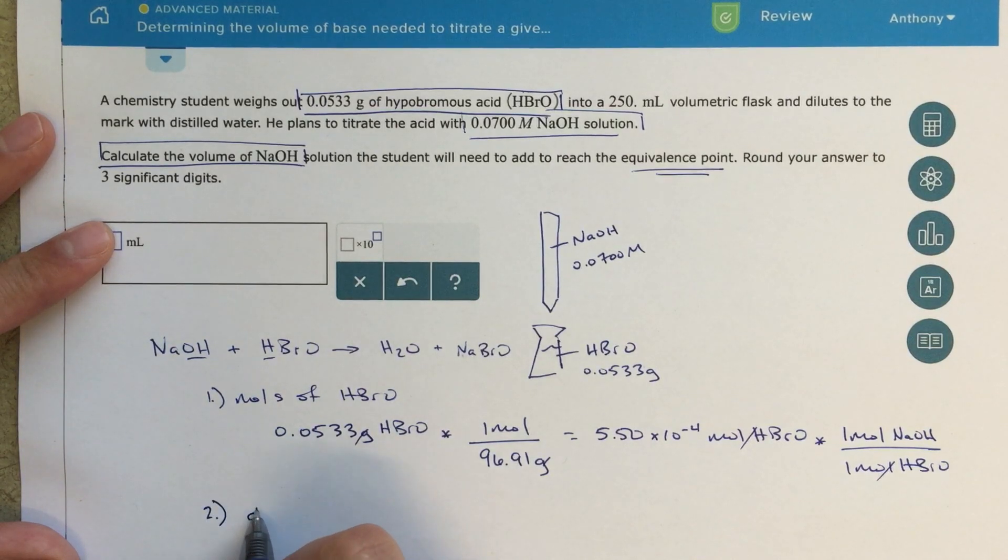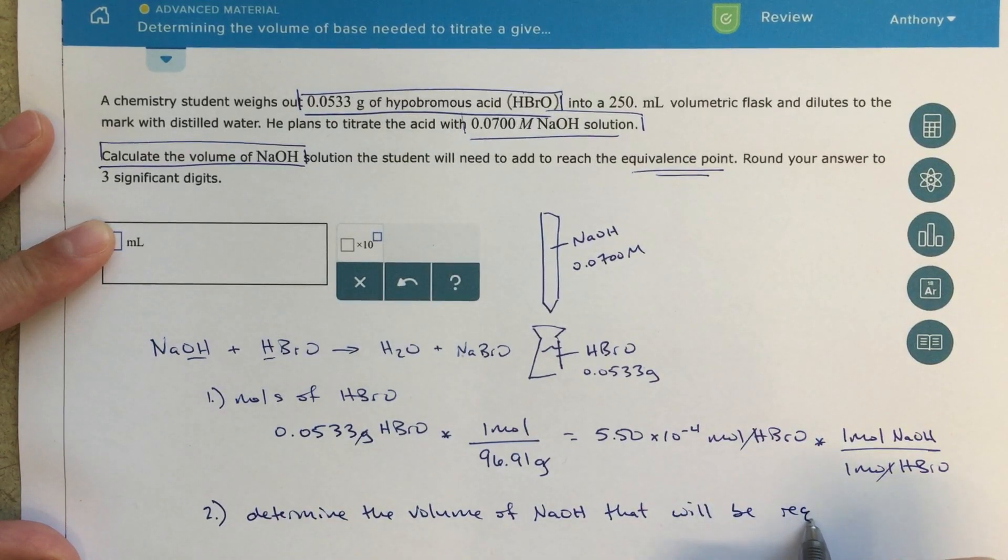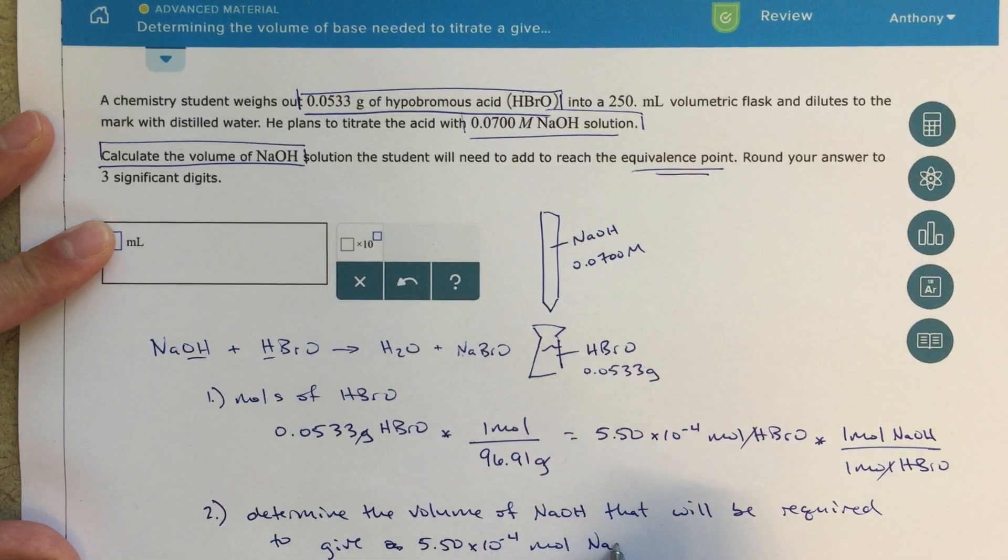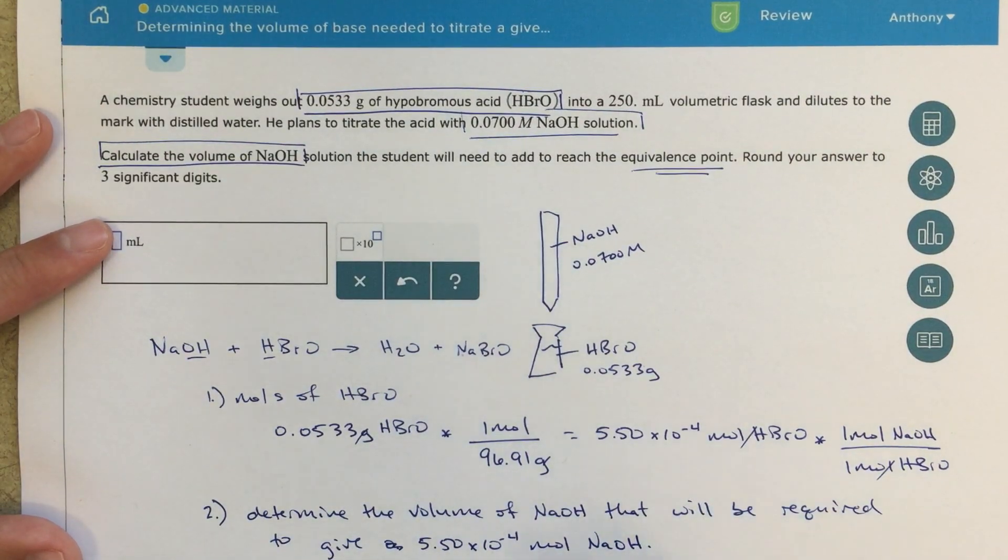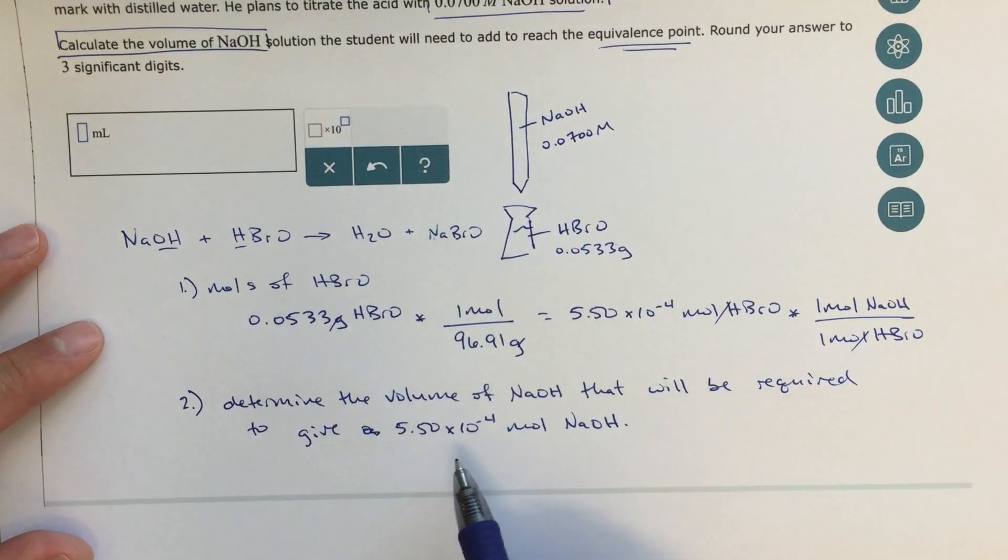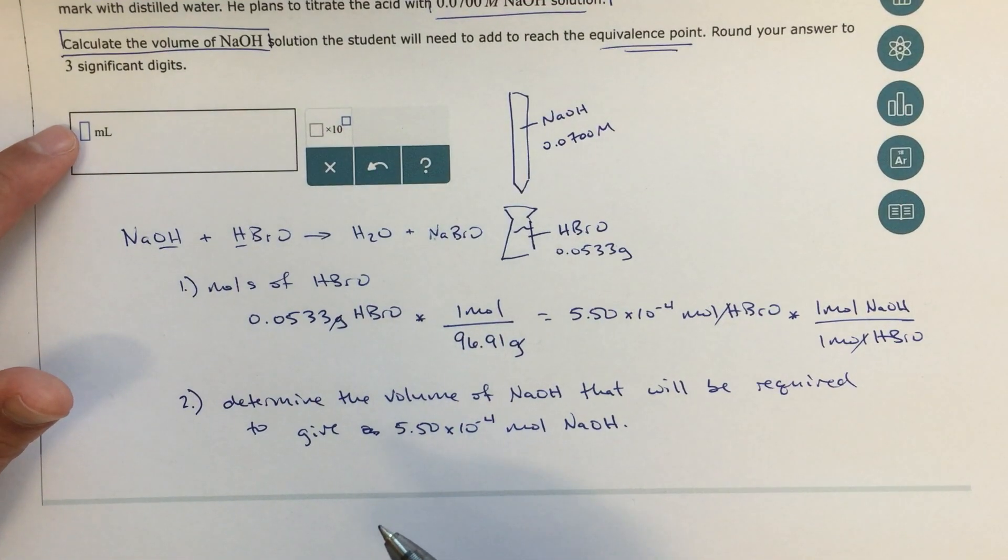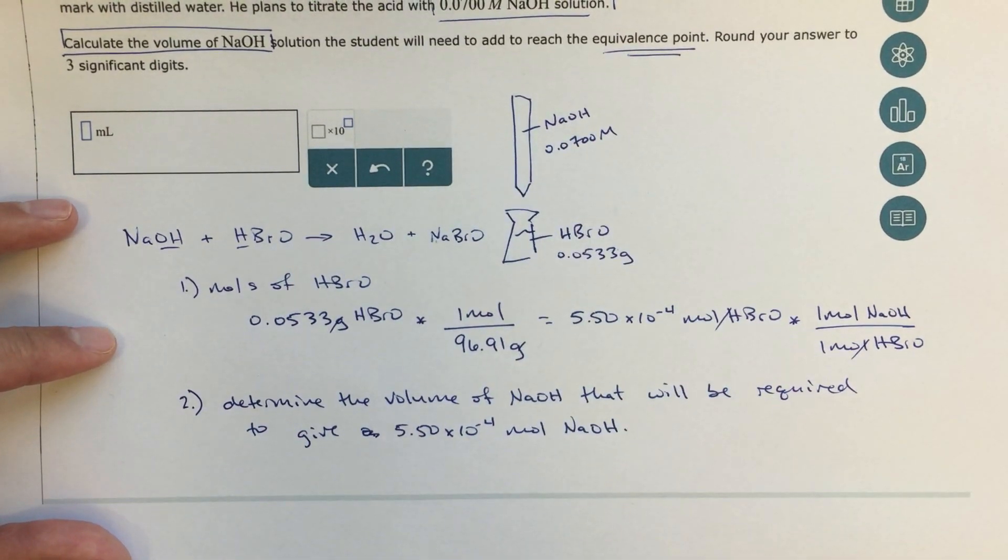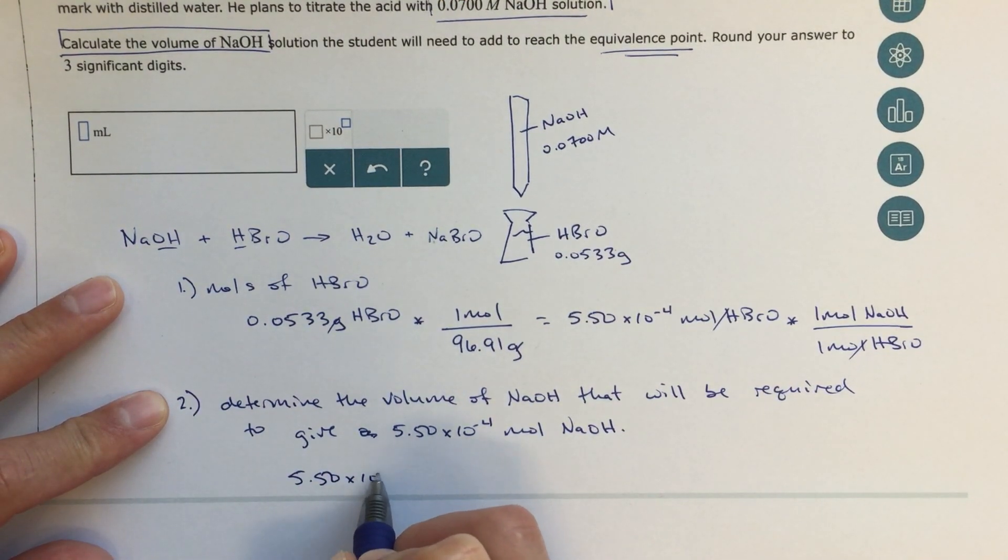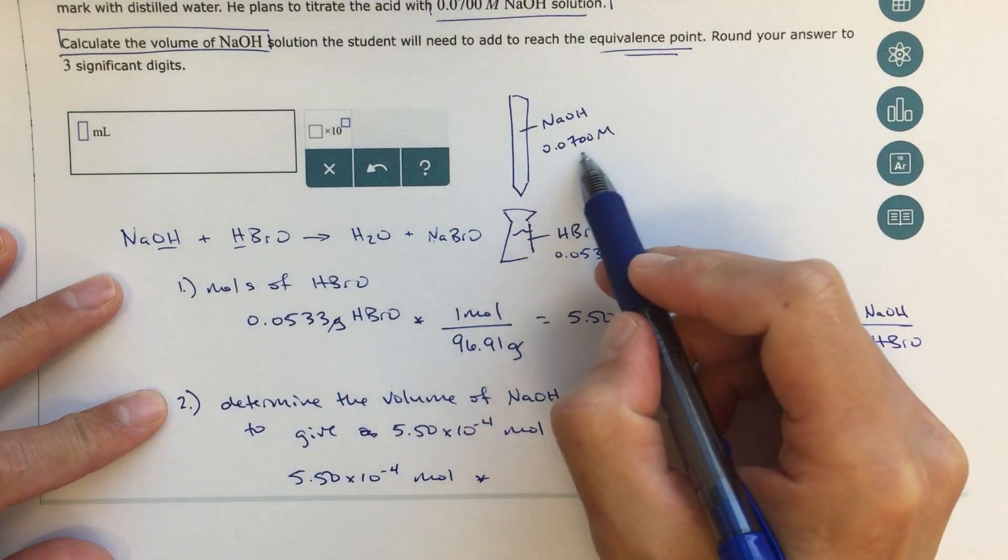The next step is to determine the volume of NaOH that will be required to give 5.50 times 10 to the minus fourth moles of NaOH. So this is really the question that we need to solve for the last part of this, and I'm sort of asking myself this question because we're looking for a volume. I know my final answer is supposed to be a volume, we're given a molarity of the sodium hydroxide, and we have a certain number of moles that we need to sort of get to, essentially. The calculation that I would do: 5.50 times 10 to the minus fourth moles times—and now I've got 0.07 molar sodium hydroxide.